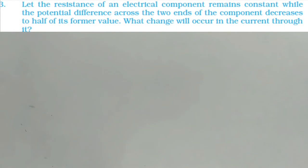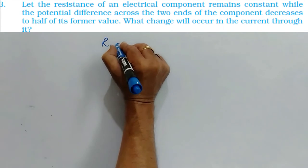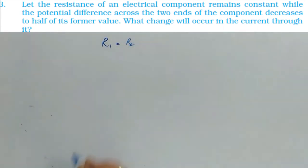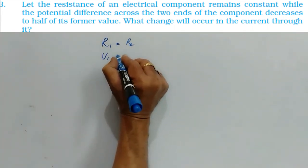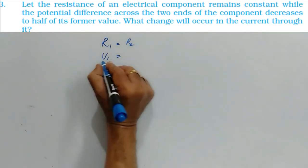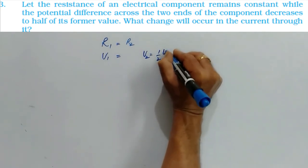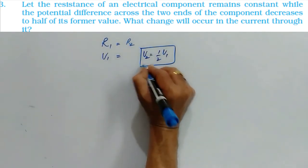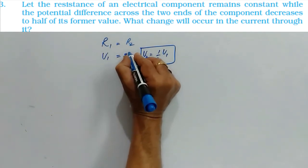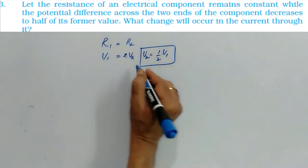In this question, resistance in two different cases is same, R1 is equal to R2, but the potential difference V1 is reduced to half. So V2 is half of V1. So I can write V1 as 2 V2 from this relation. It is given data. Now he is asking about I1 and I2.